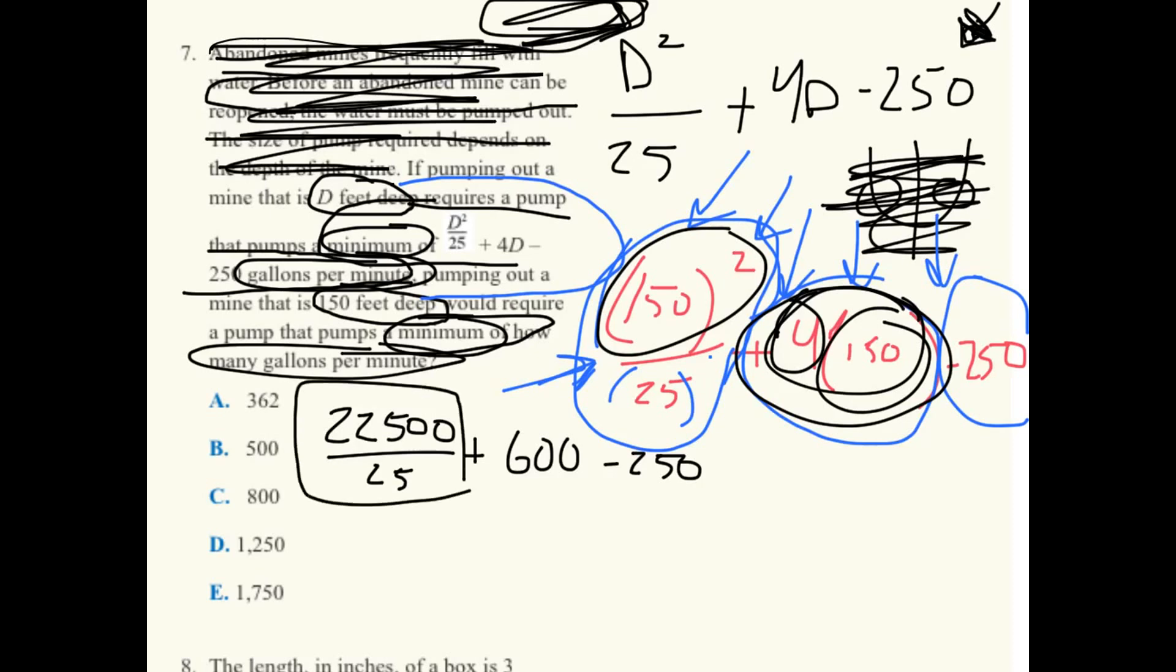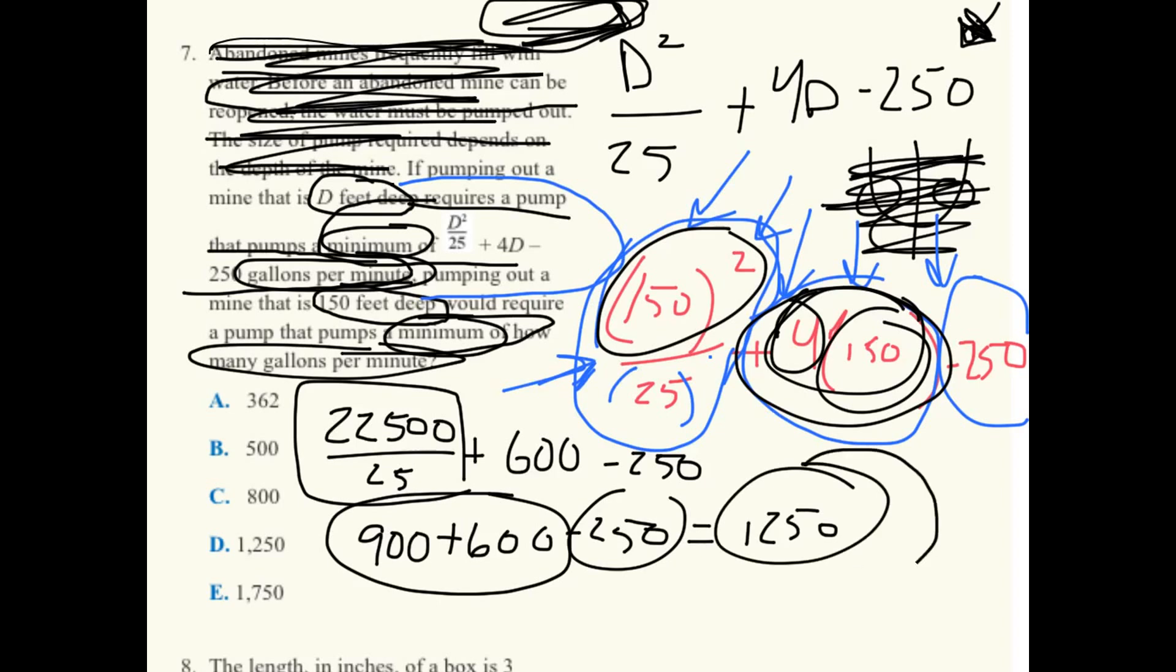Now let's simplify this one a little more. It's going to be 900 plus 600 minus 250. And then we know we can just work that out, that'd be 900 plus 600 which is 1500 minus 250 which is 1,250. Is that an answer? Okay let's circle it, D is the answer.